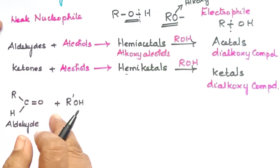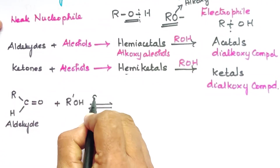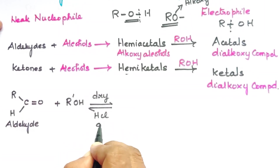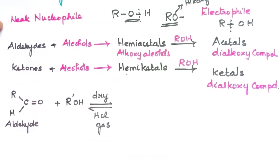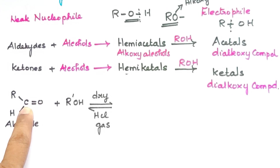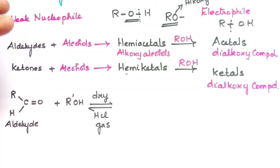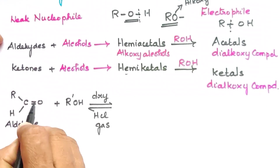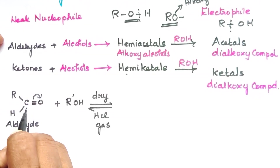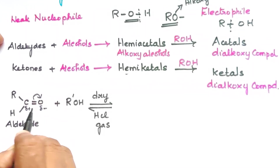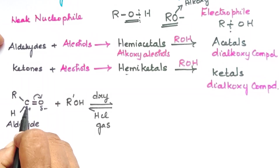Two equivalents of alcohol react with an aldehyde or ketone in the presence of an acid catalyst, which is dry HCl gas. Dry HCl gas is used because alcohol is a weak nucleophile. The dry HCl catalyst increases the electrophilicity of the carbonyl carbon, increasing its electron-loving nature so that even a weak nucleophile can attack. The C=O double bond shifts, giving carbon a positive charge and oxygen a negative charge.